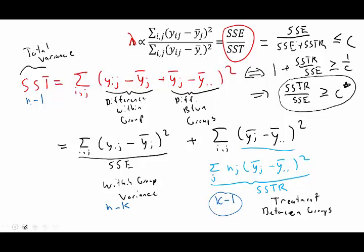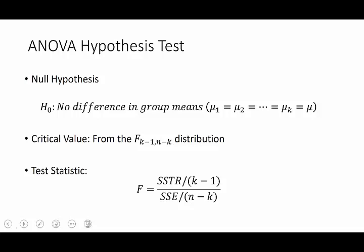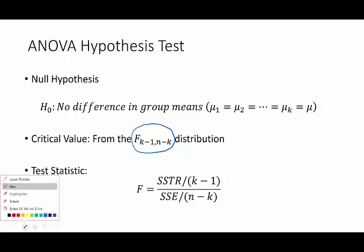To review everything we've done, the null hypothesis is that there's no difference in group means. The alternative is that there is a difference. To derive a rejection region, we're going to look at critical values from an F distribution with k minus one and n minus k. The k minus one is for the treatment sum of squares, the n minus k is from the error sum of squares. Finally, our test statistic is going to be the ratio of the SSTR to the SSER where we've normalized with degrees of freedom in both.